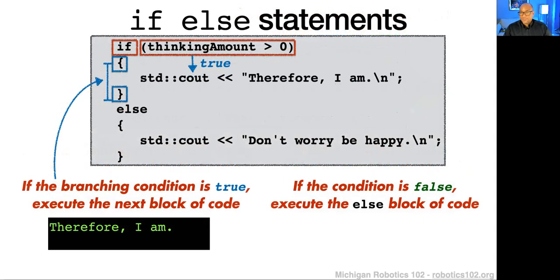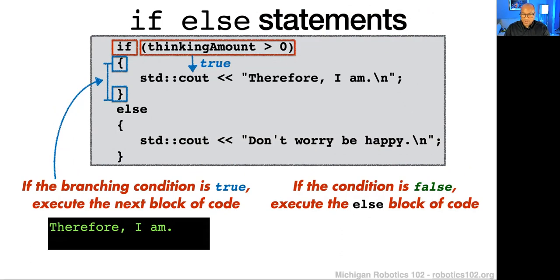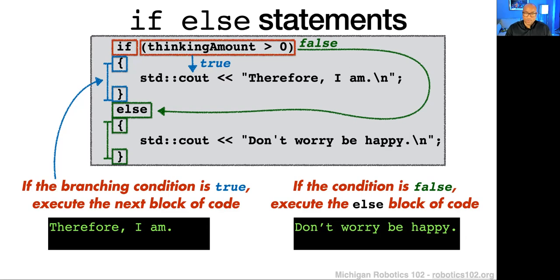We can also say: what if we didn't want to just continue when the condition is false, but wanted another case where we can print something different? An if-else statement allows us to do this. Similar to our if statement, we still have a branching condition. If the branching condition is true, we execute that statement. But if the branching condition is false, we execute this else block of code — in this case saying 'Don't worry, be happy.' This is the structure of an if-else statement; it gives us the power to decide whether to do this or that.